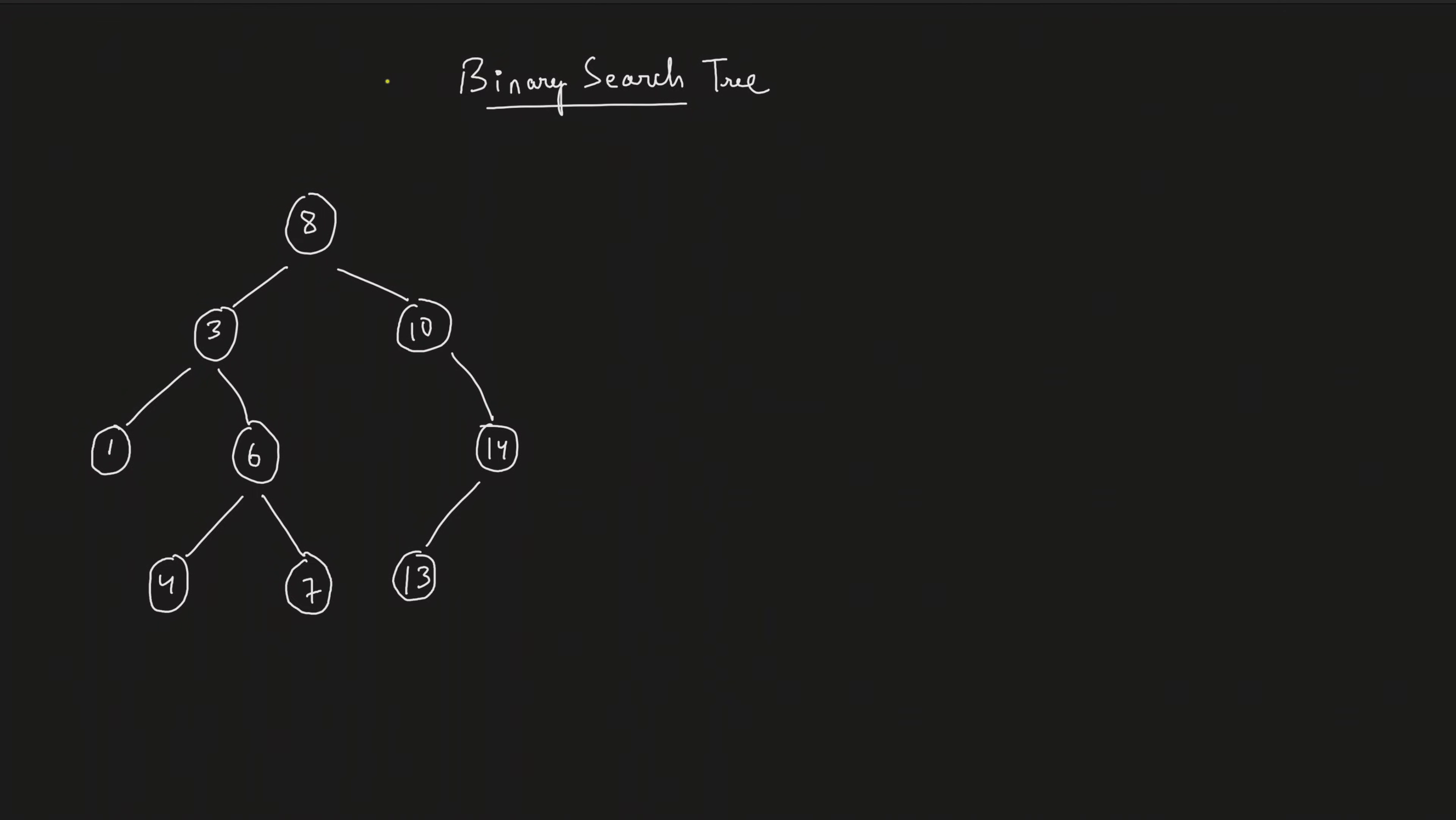What is a binary search tree? How is that different from binary tree? In binary tree, it doesn't matter what node was on the left, what node was on the right. In binary tree, it never mattered. In binary search tree, it matters.